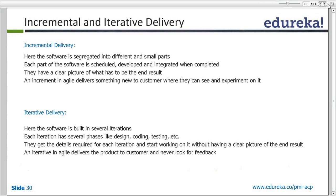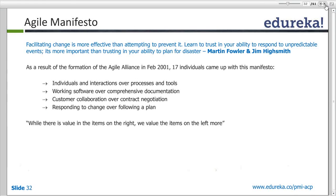Incremental delivery can be explained with the Mona Lisa example. In incremental, I first work on the face, then the arms, then the complete body — building piece by piece. In iterative, I work on the complete picture of Mona Lisa from the start, but I am enhancing it progressively each time.